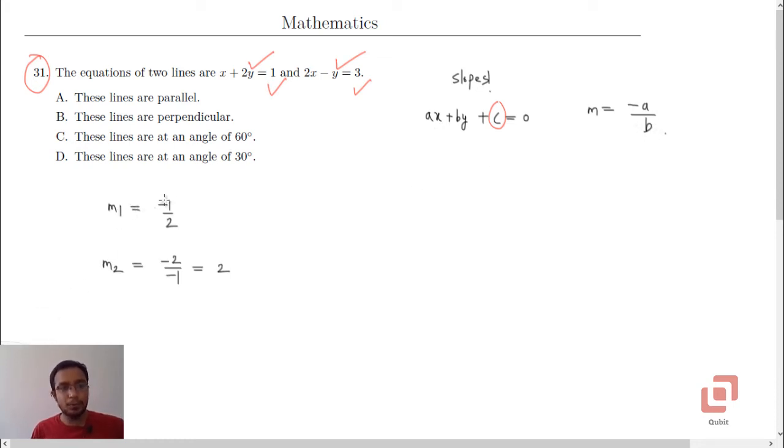So, the slope of the first line will be negative 1 upon 2 and the slope of the second line will be negative 2 upon negative 1 or 2.